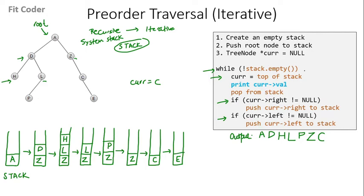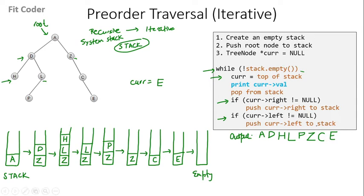We again come to the while condition. The top of the stack is E, so current becomes E. We print E and pop from the stack — stack is now empty. We check right of E: null. Left of E: also null. So these conditions are false. We check the while condition again — the stack is now empty. So the while loop terminates, and this is our pre-order traversal that we have obtained.